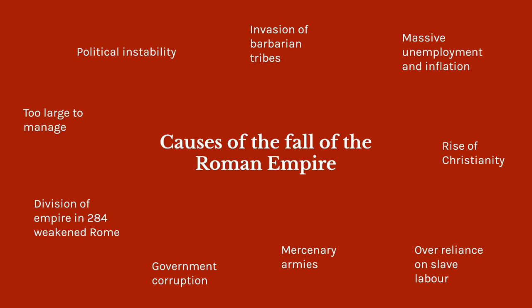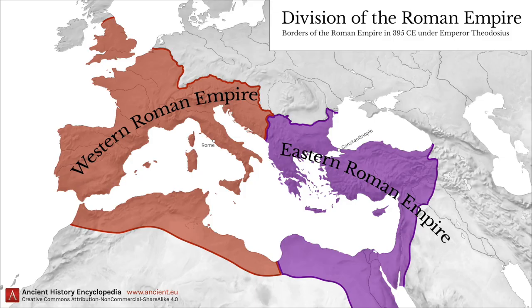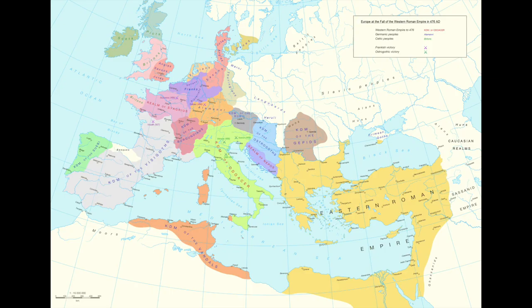There is no single cause, however, and it took around 300 years for Rome to fall. It should also be noted that the fall of Rome, quote-unquote, only refers to the western part of the empire ending in circa 476 CE. The eastern part of the empire continued until 1453 CE.